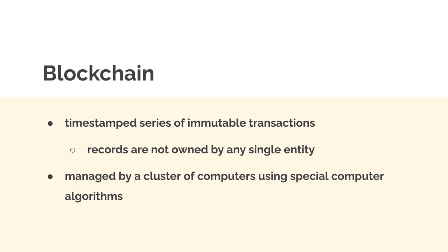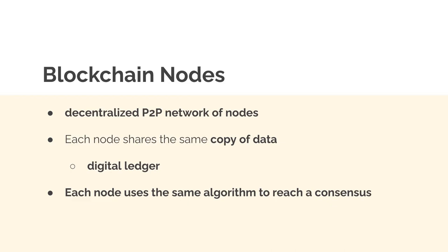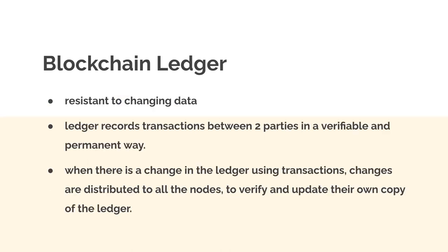The records of a blockchain aren't owned by any single entity like a bank. Instead, they're managed by a cluster of computers using special algorithms. A blockchain is a system of decentralized nodes — a decentralized person-to-person network. Each node shares the same copy of data known as a digital ledger, and each node uses the same algorithm to reach a consensus. A blockchain ledger is resistant to changing data, recording transactions between parties in a verifiable and permanent way.